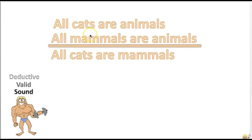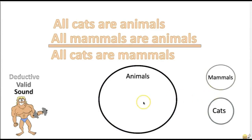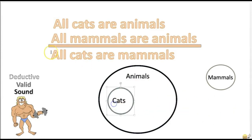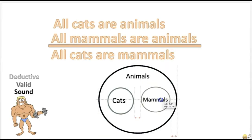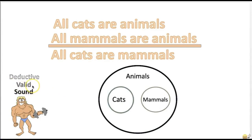Any deductive argument with true premises and a false conclusion is invalid. Here's an example of an invalid deductive argument. It's not necessary that the premises be actually true and the conclusion actually false — if it's merely possible for the premises to be true and the conclusion false, the argument is invalid. For instance: 'All cats are animals. All mammals are animals. Therefore, all cats are mammals.' The cats are not necessarily in the mammal circle, so the conclusion is false. Validity is determined by the relationship between premise and conclusion — a valid argument reflects good reasoning, an invalid one reflects bad reasoning.